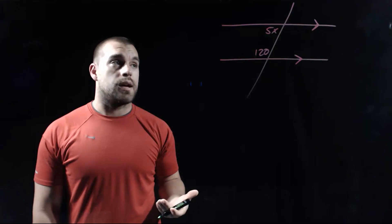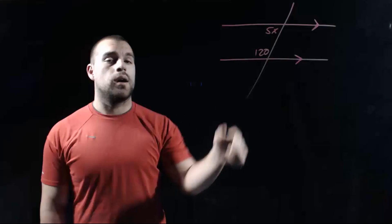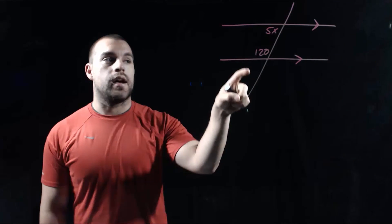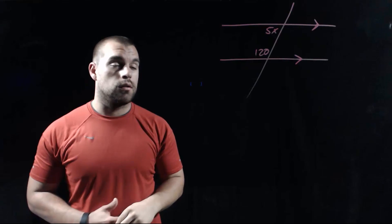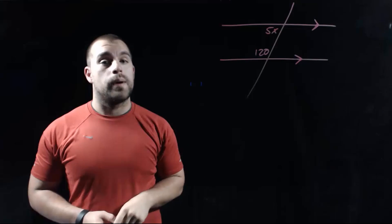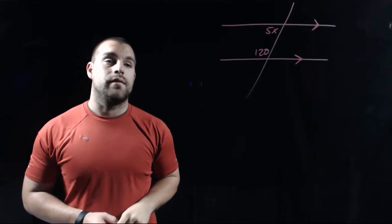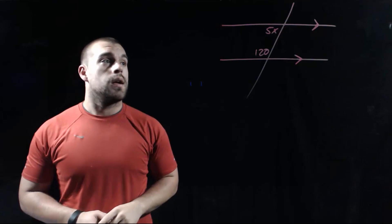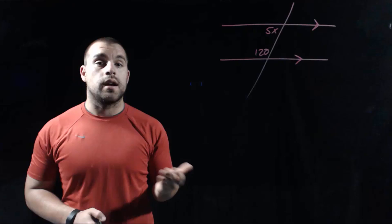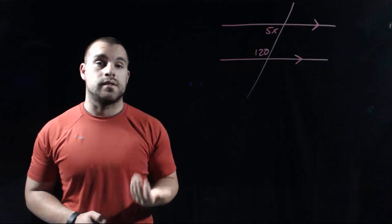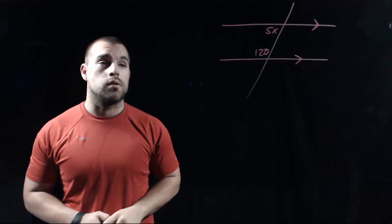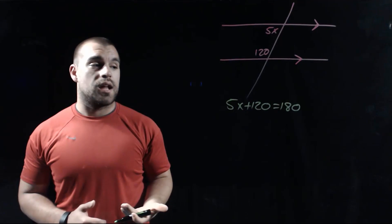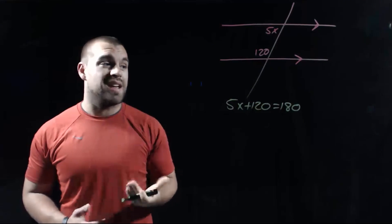In our last example, we've changed the picture just a little bit. We've still got our two parallel lines with the transversal running through them. Now we've got angle 5x and this 120 degree angle. These are between our two parallel lines and on the same side of the transversal, so these are consecutive interior angles. The relationship with consecutive interior angles is that they're supplementary, meaning they add up to 180 degrees. So the equation we can set up is 5x plus 120 equals 180.